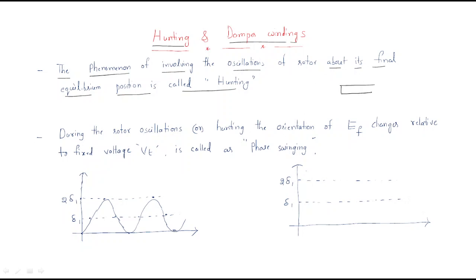Assume the rotor has a north pole and a south pole, and the stator is arranged around it. Sometimes due to fluctuations, the rotor will have some oscillations. This phenomenon is called hunting.